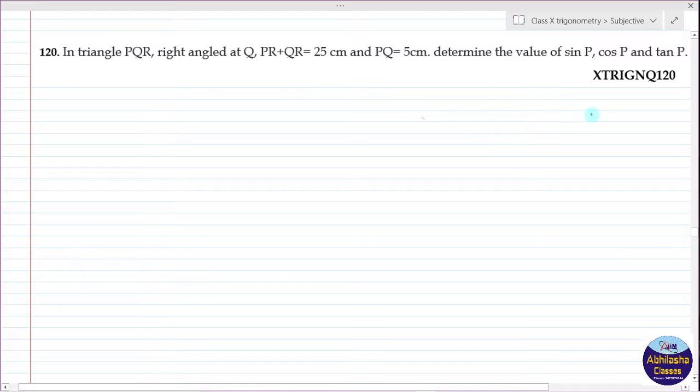So we have a triangle, given a right angle triangle, and it is PQR. So let this be the triangle PQR, and at Q we have P and at R, and this is the angle 90 degrees.